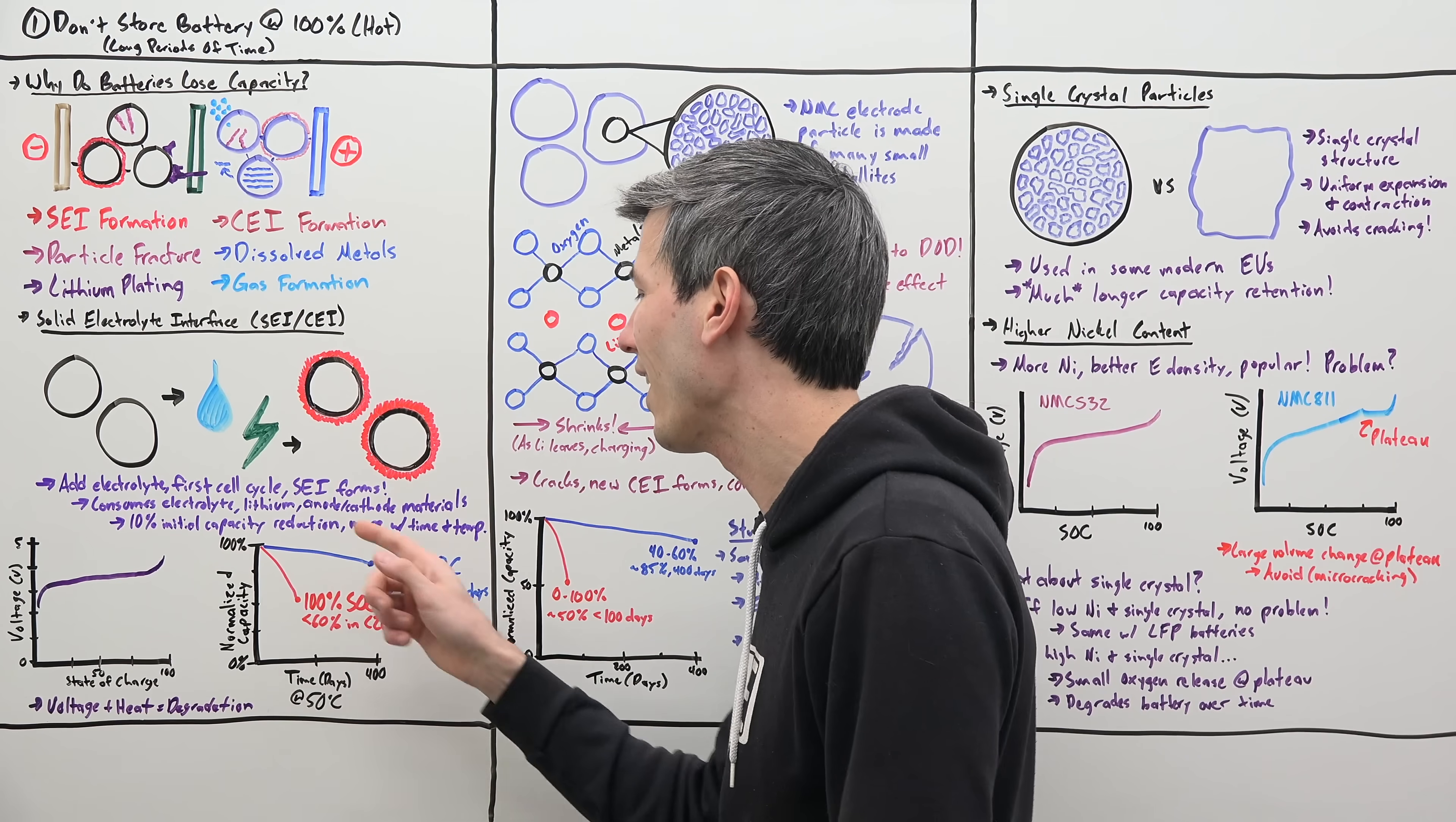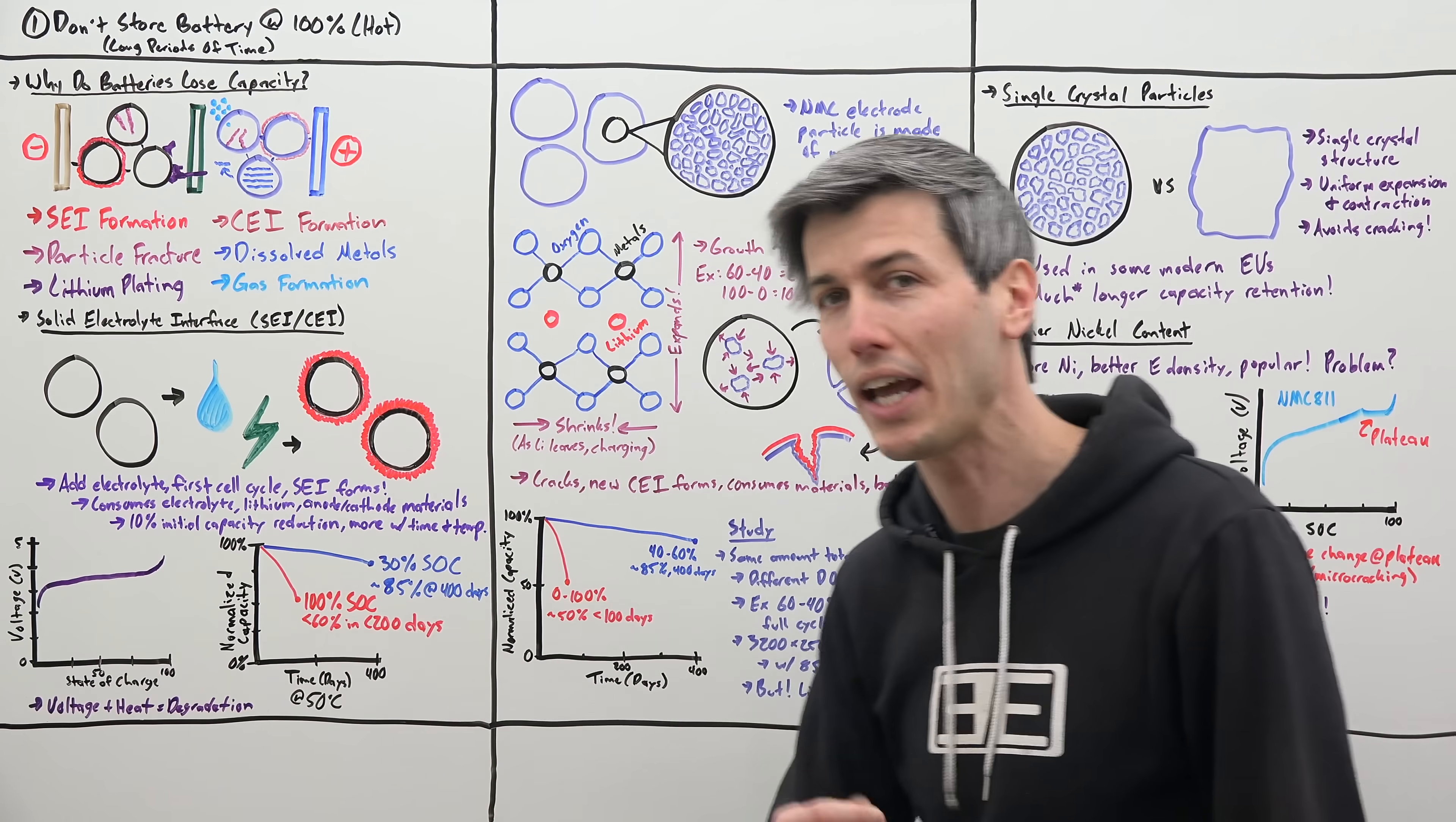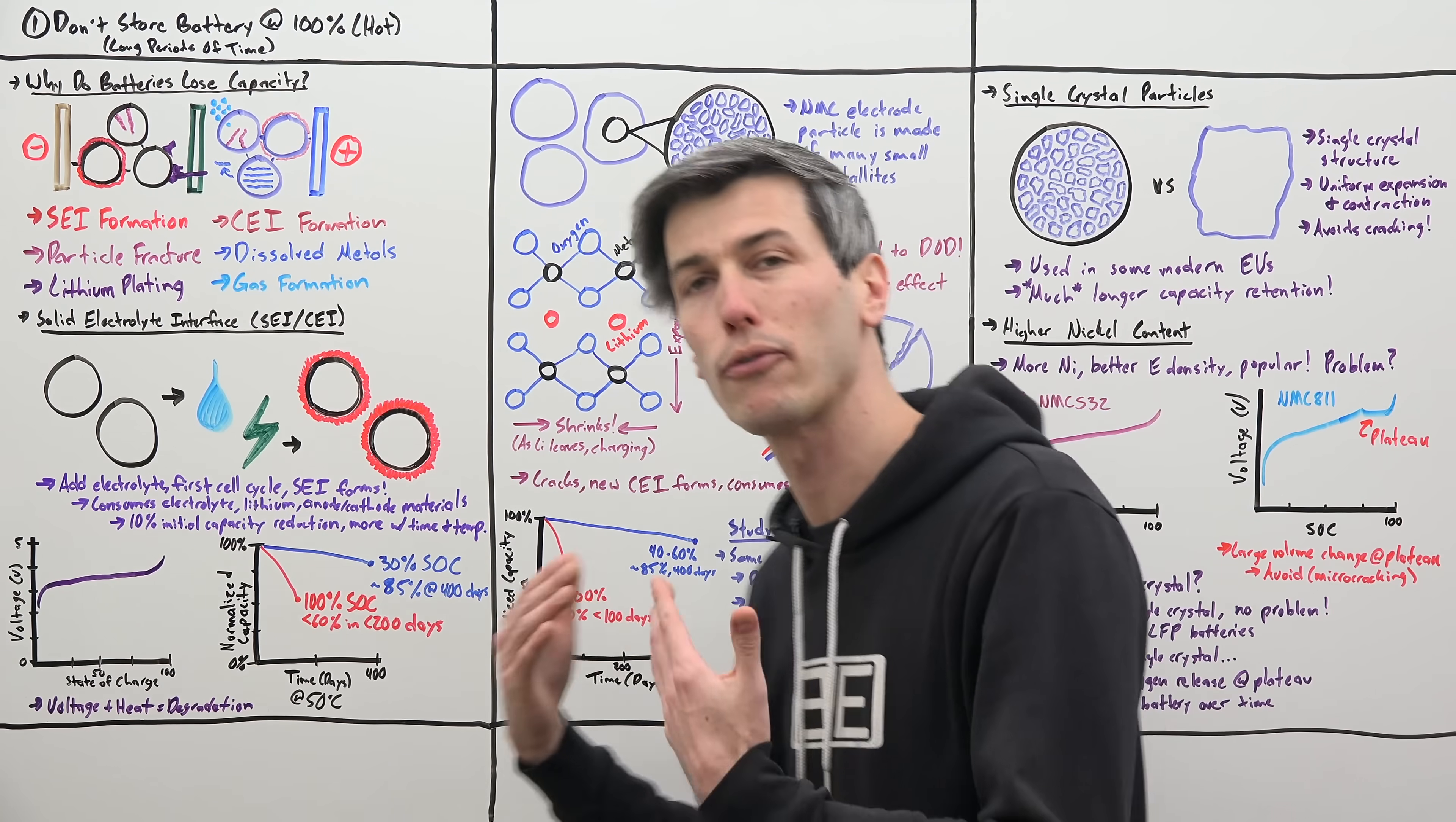The battery that was stored at 100% state of charge had less than 60% of its original capacity after less than 200 days. So it had degraded a ton versus the battery stored at 30% state of charge was only down to 85% of its original rated capacity after about 400 days.